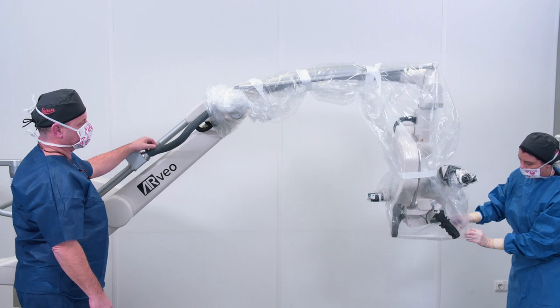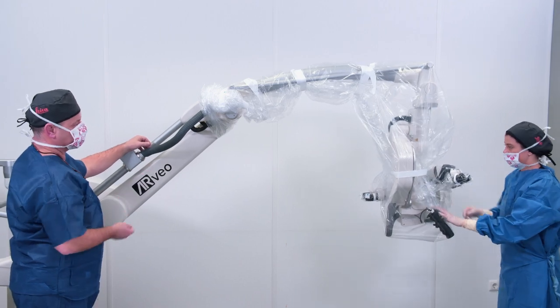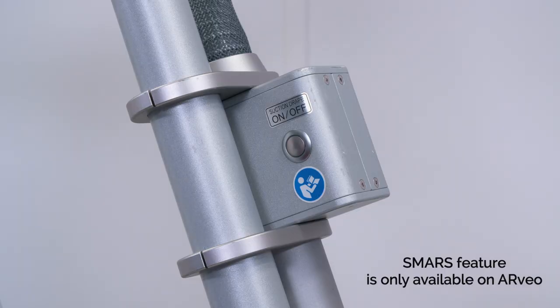If your microscope is equipped with SMARS, the circulating nurse will press the SMARS button. This will activate the pump to extract the air from under the drape.